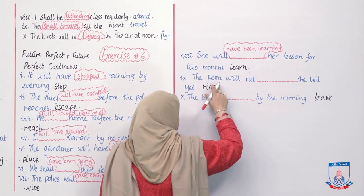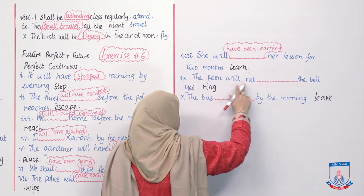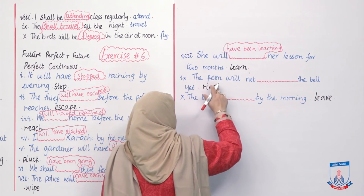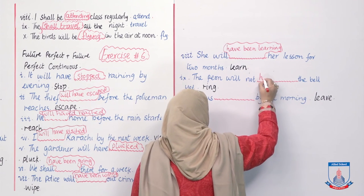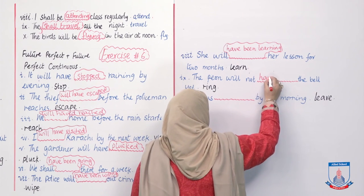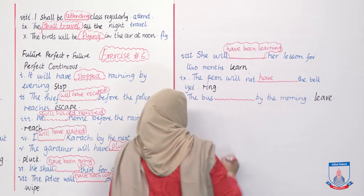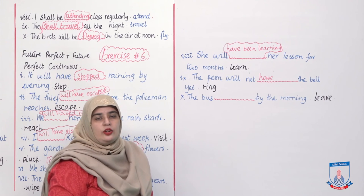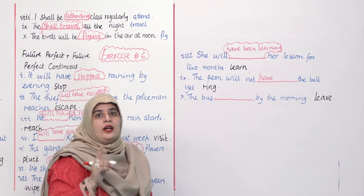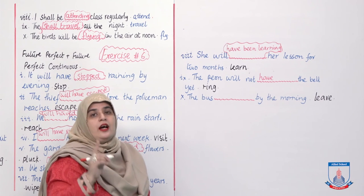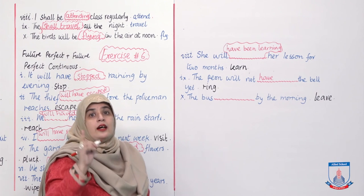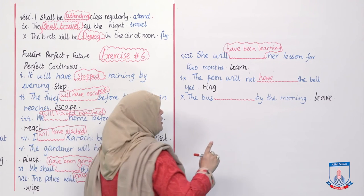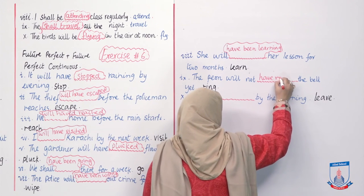'The peon will not ___ the bell yet.' Yeh irregular verb hai. Answer: 'The peon will not have rung the bell yet.'